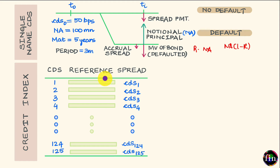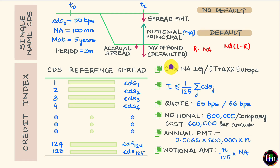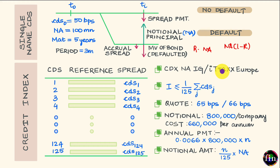Let's look at a couple of popular examples of credit indices. The first is the CDX NA IG index, which contains 125 reference names drawn from North America — specifically the 125 names with the highest liquidity that have investment-grade credit ratings. Another example is the iTraxx Europe index, which again has 125 names with investment-grade ratings, drawn from the European region.